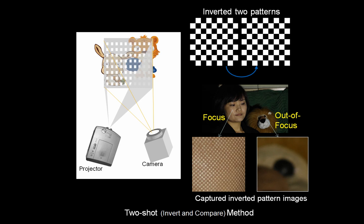In the second method, called invert and compare, we capture two photos with inverted patterns. We acquire a variance map by subtracting the captured images, and a full resolution highlighted depth of field photo is generated based on the map.